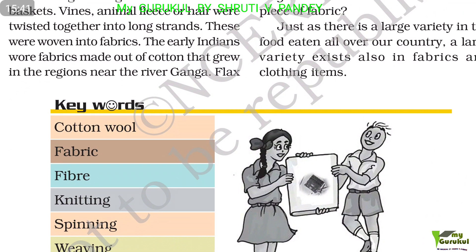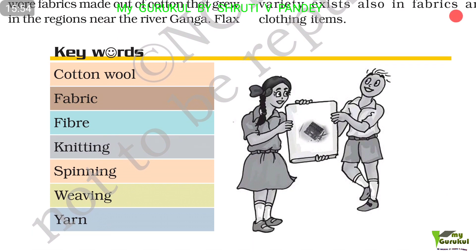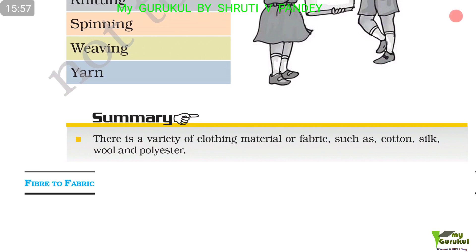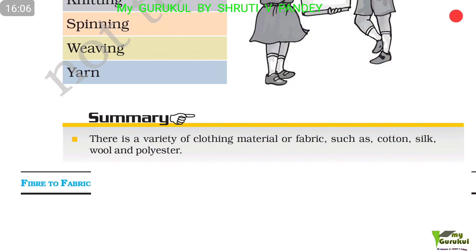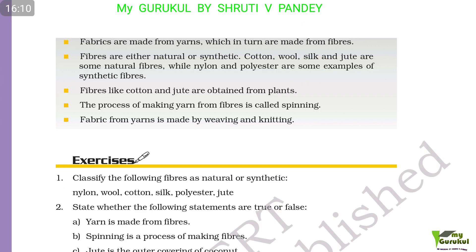Summary: Cotton bolls after ginning become fiber. Fiber after spinning gives yarn. Yarn after knitting or weaving gives fabric. There is a variety of clothing material fabrics such as cotton, silk, wool, and polyester. Fabrics are made from yarns, which in turn are made from fibers. Fibers are either natural or synthetic. Cotton, wool, silk, and jute are some natural fibers, while nylon and polyester are examples of synthetic fibers. The process of making yarn from fibers is called spinning; fabric from yarns is made by weaving and knitting.